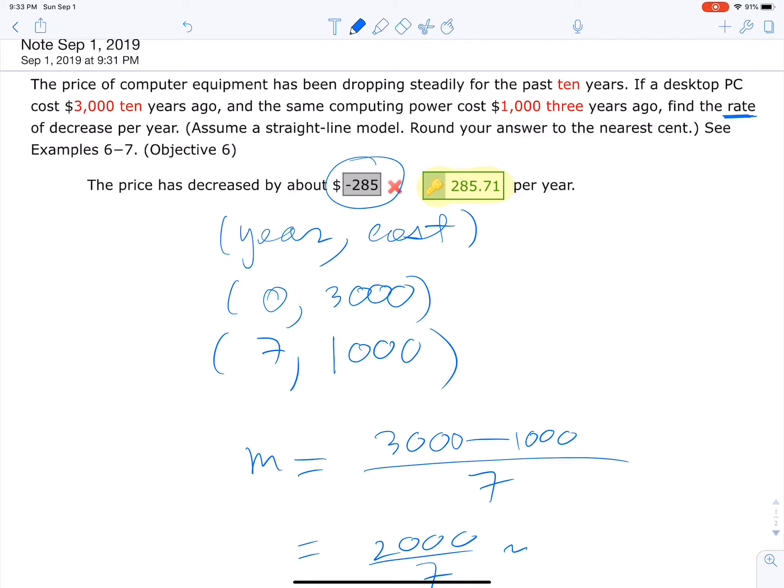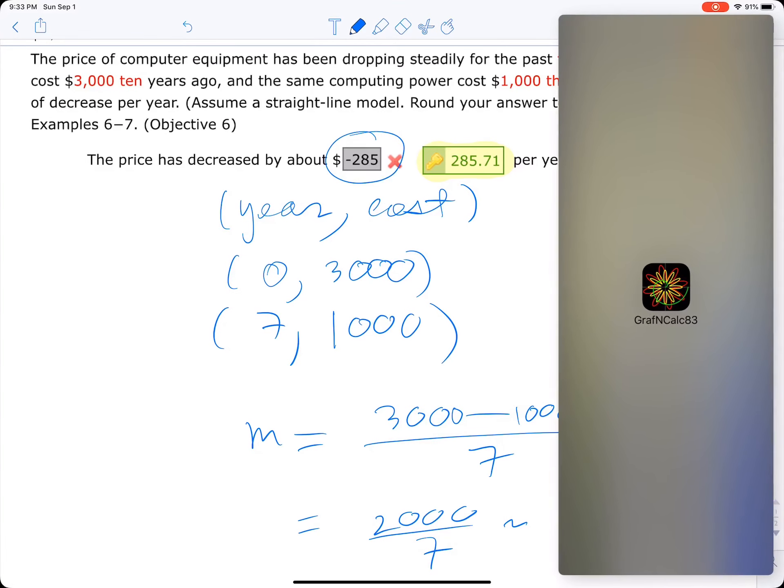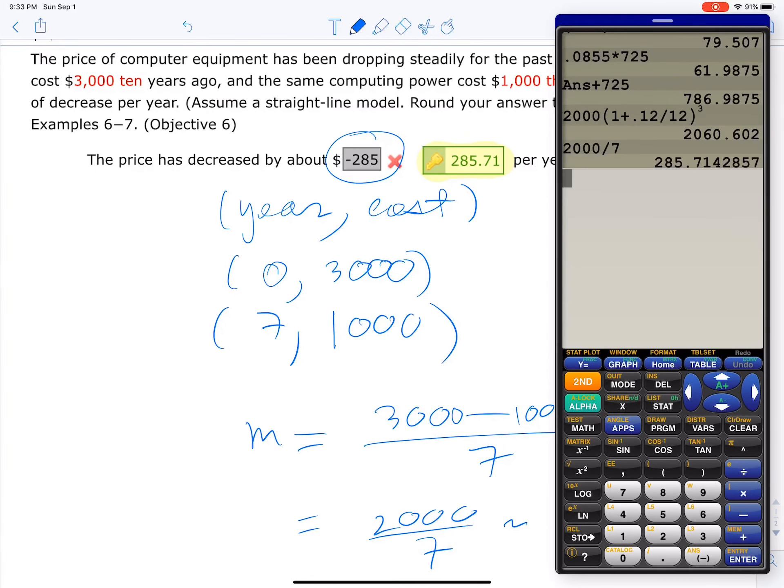Also be careful with rounding. Does it say anything about rounding? It says round to the nearest cent, so 71 cents should be the answer, right, as we saw from our calculator. Yeah. All right, that's it.